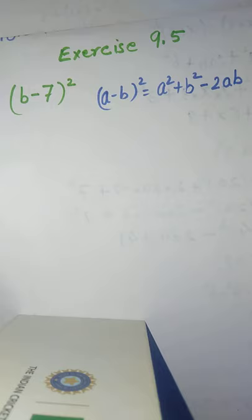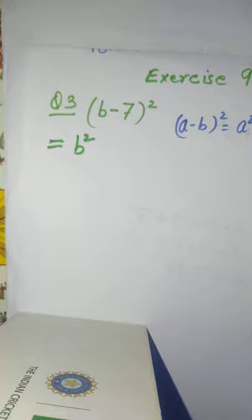In place of a the first term is b, and the second term is 7. So applying this identity, (b - 7) whole square equals b square plus 7 square minus 2 into b into 7.